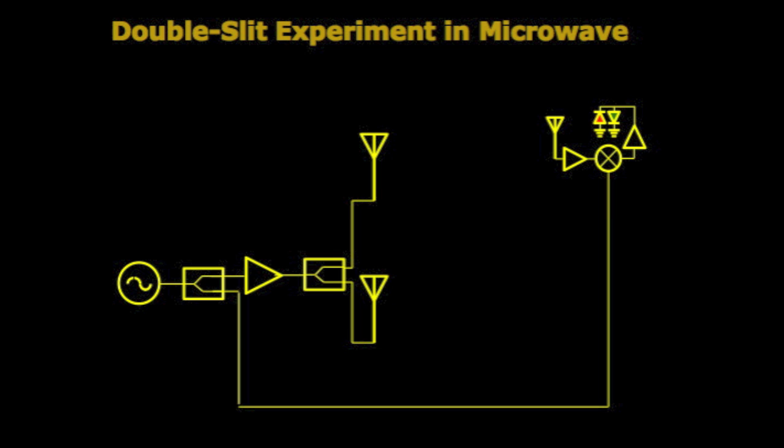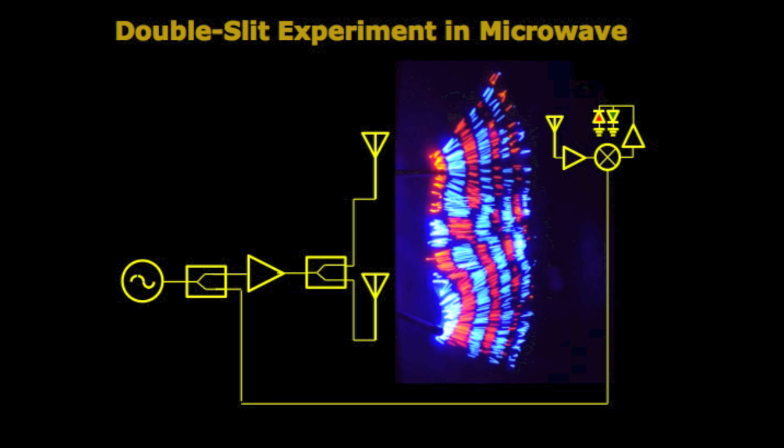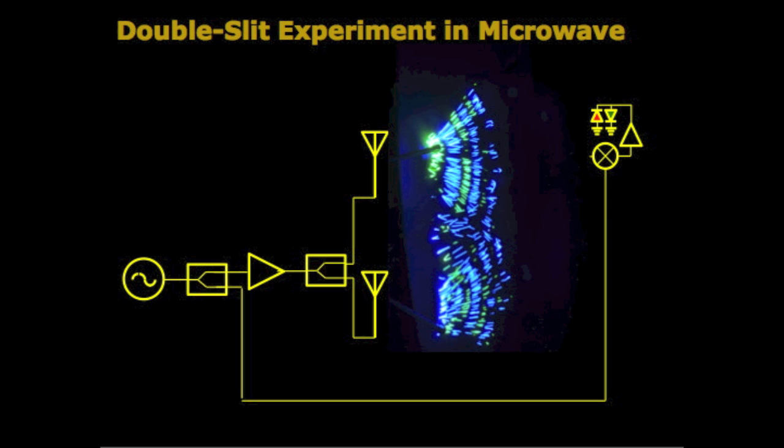By switching to isotropic antennas, we also performed an interference experiment. As one can see, the interference is proportional to how far the antennas are from each other. This experiment won us first place in an IEEE MTT contest.